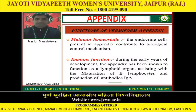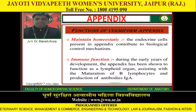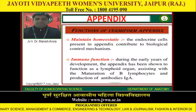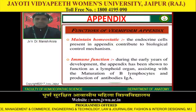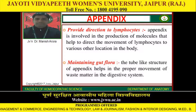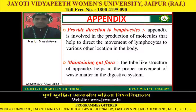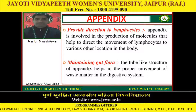Functions of the vermiform appendix: It helps maintain homeostasis, as the endocrine cells present in the appendix contribute to biological control mechanisms and immune function. During the early years of development, the appendix has been shown to function as a lymphoid organ, assisting with the maturation of B lymphocytes and production of antibodies (IgA). The appendix is also involved in the production of molecules that help to direct the movement of lymphocytes to various other locations in the body.